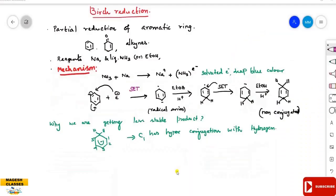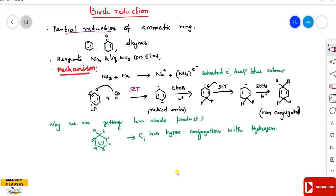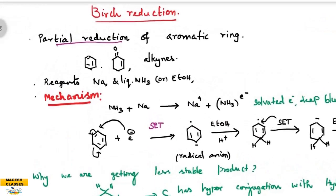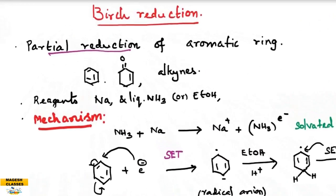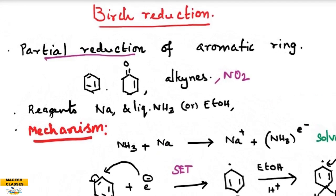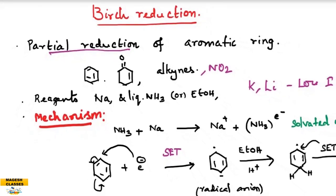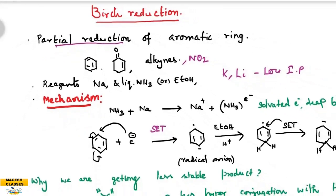What is Birch reduction? It is the partial reduction of an aromatic ring - that is, benzene - and also alkynes, and sometimes the nitro group. The reagents used are sodium and liquid ammonia. Potassium and lithium can also be used.